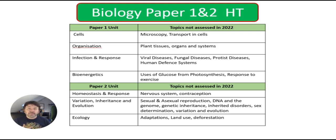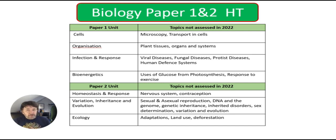Human defence systems — so things like white blood cells was not there last year. Bioenergetics: so that was photosynthesis, uses of glucose from photosynthesis, and in respiration, the response to exercise.